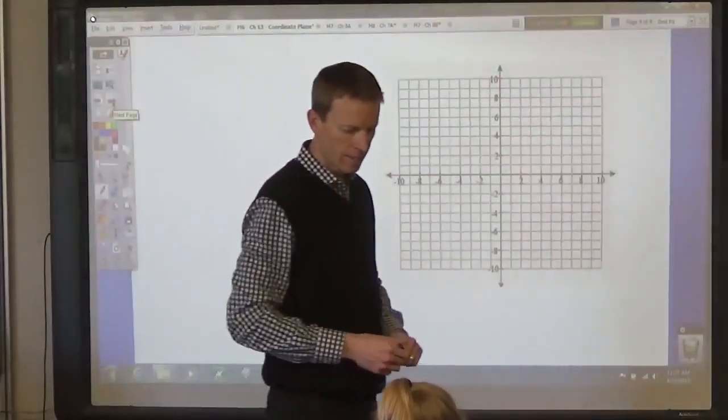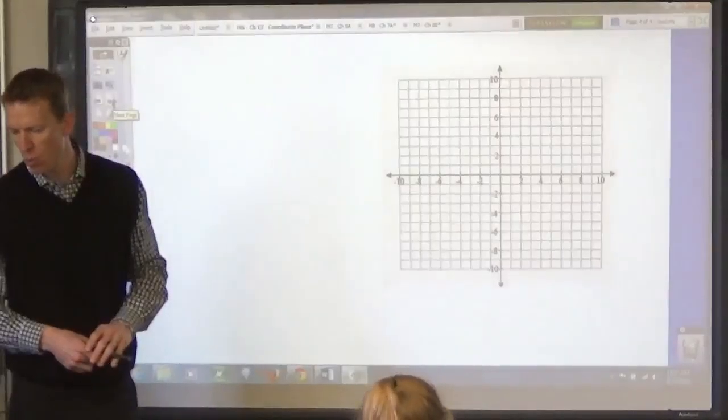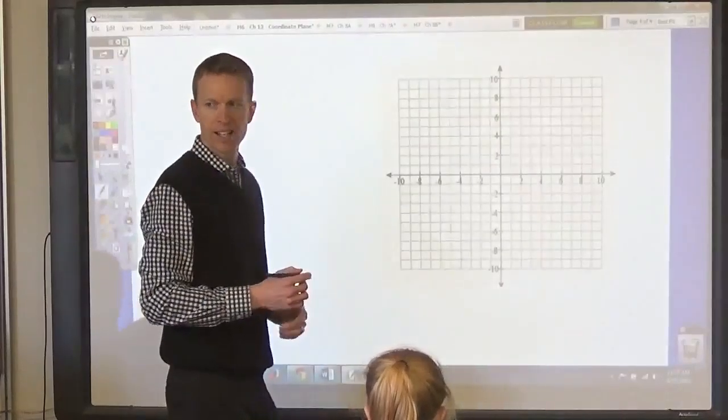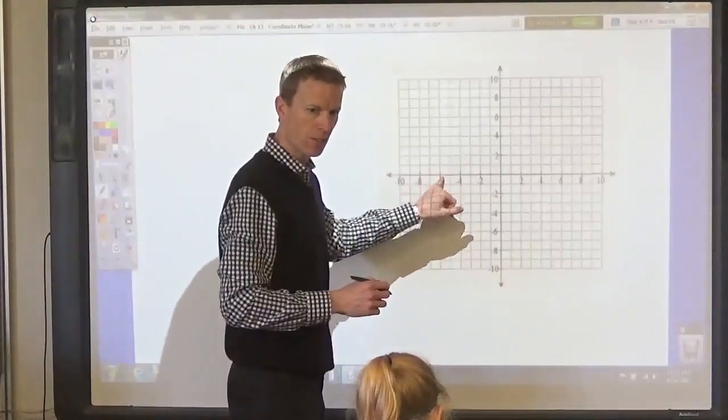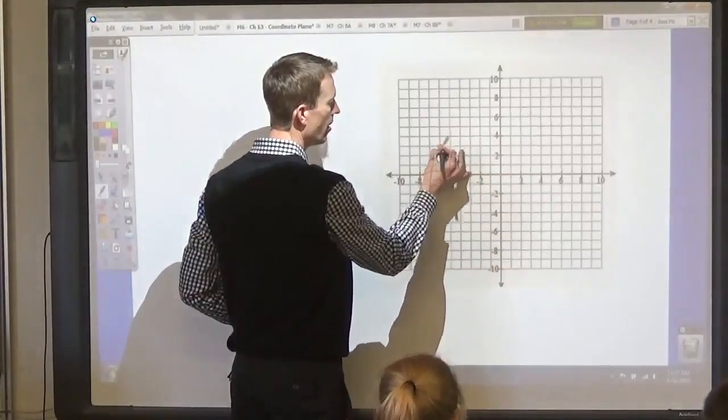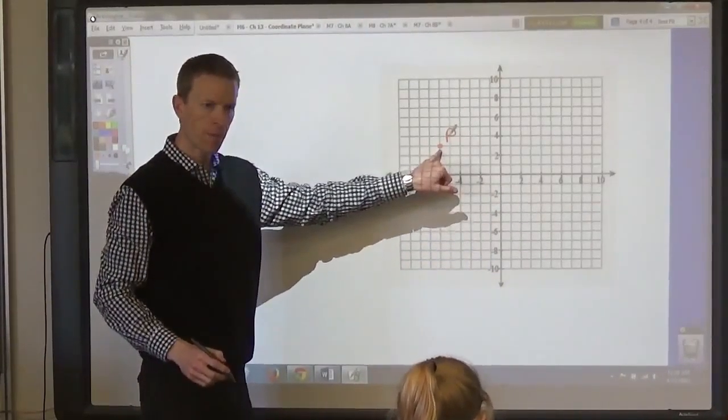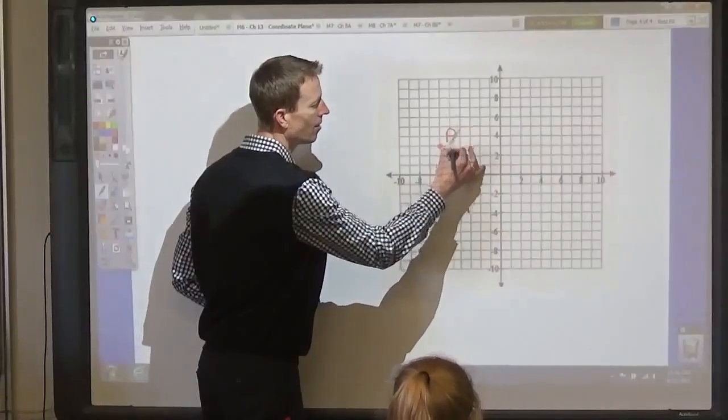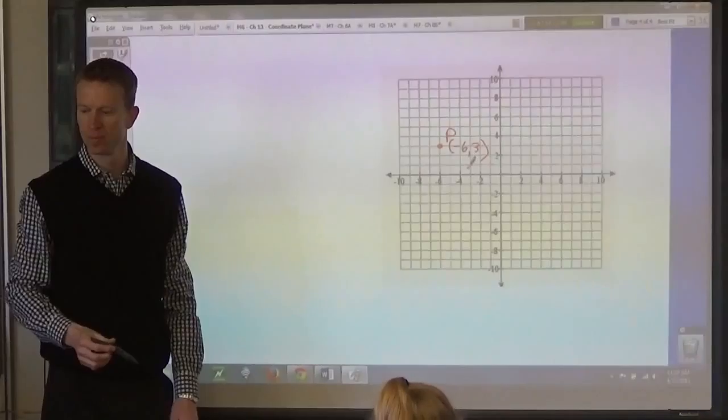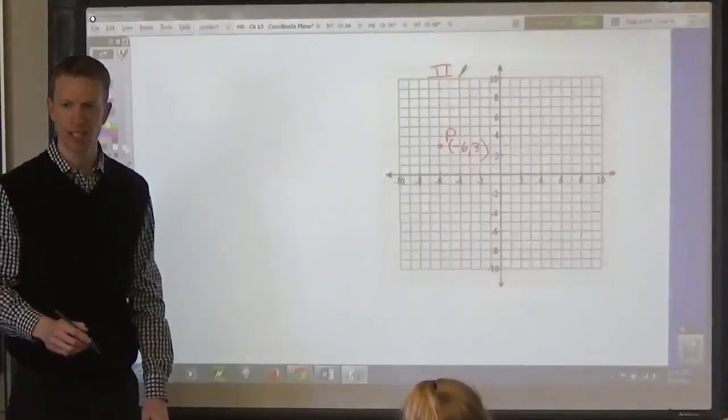Number 1. What are the coordinates of point P? What is it, Johnny? Negative 6, 3. So it goes right to here. Point P. So it is 6 to the left and up 3. Correct? Good. What quadrant is that in? 2. And positive.